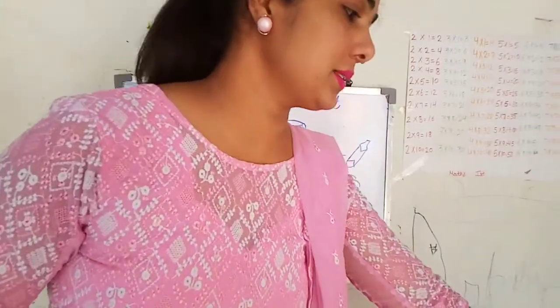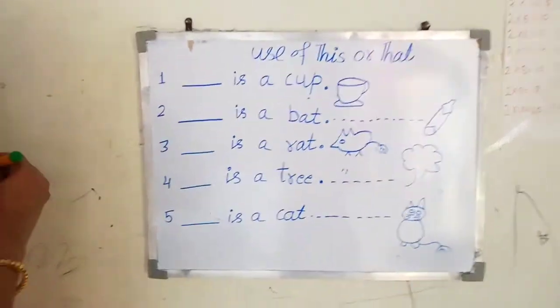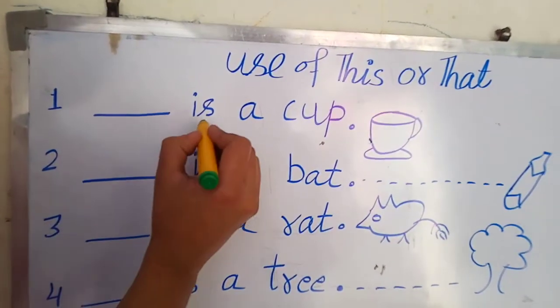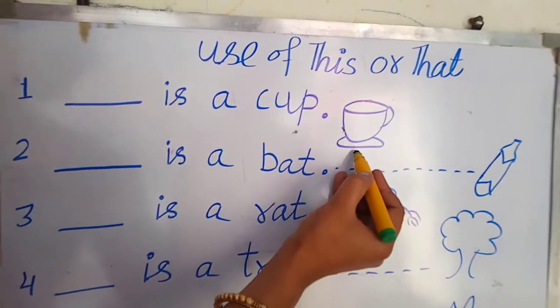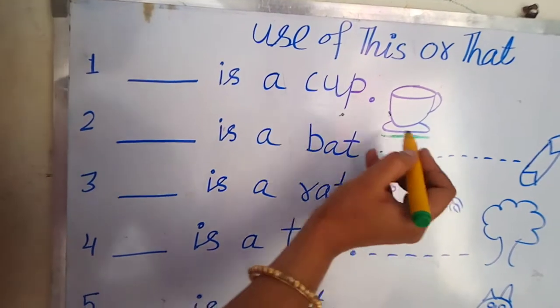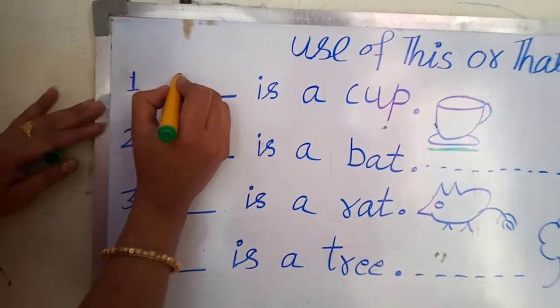Let us start. You can see, read the words, dash is a cup. Close to me or not? Yes, close to me. Yes it's very close to me, so use this.